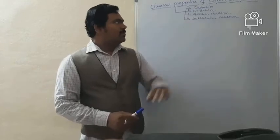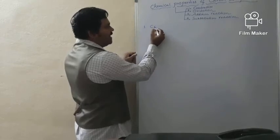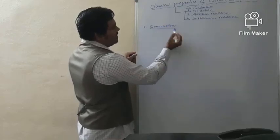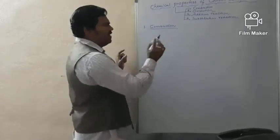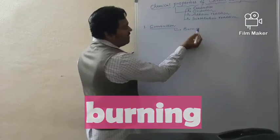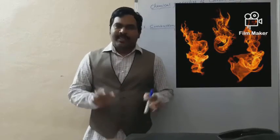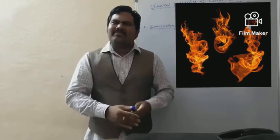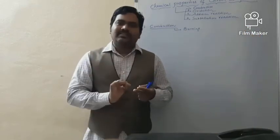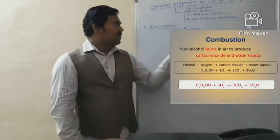Let us now discuss combustion, the very first chemical property. Combustion means burning — the burning of any carbon material in the presence of a sufficient supply of oxygen to produce heat energy and light energy, along with carbon dioxide and water. This reaction is called combustion.